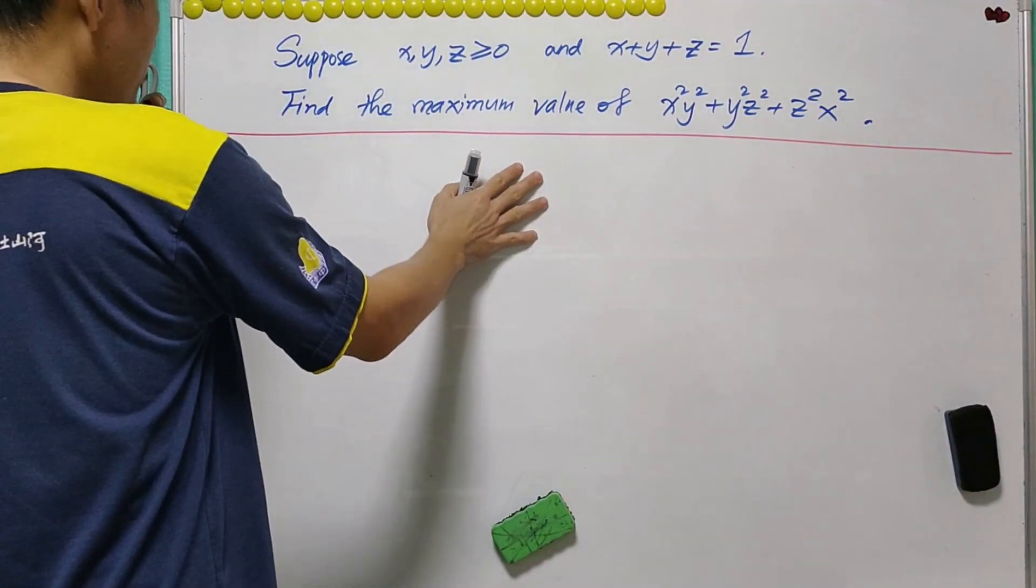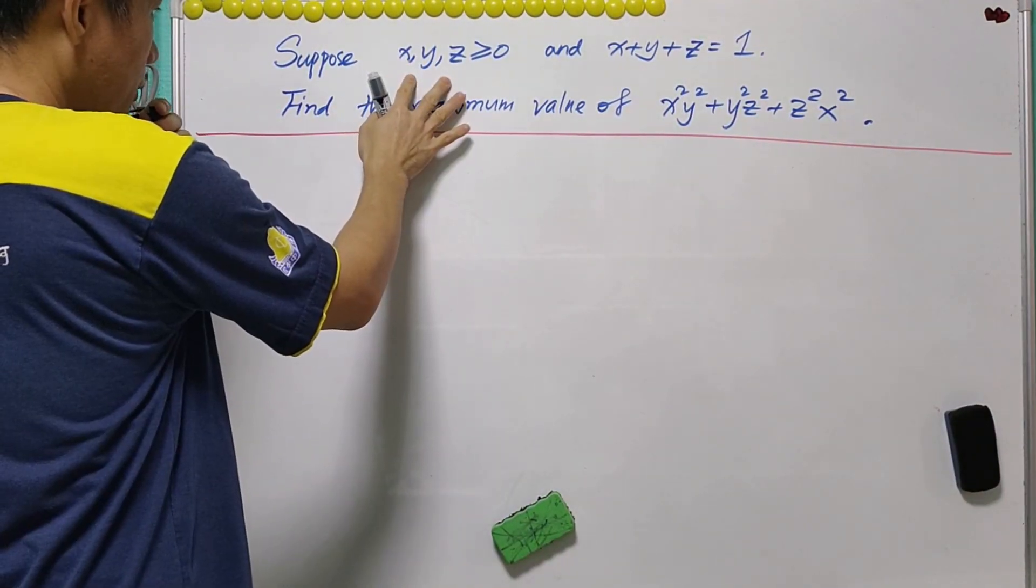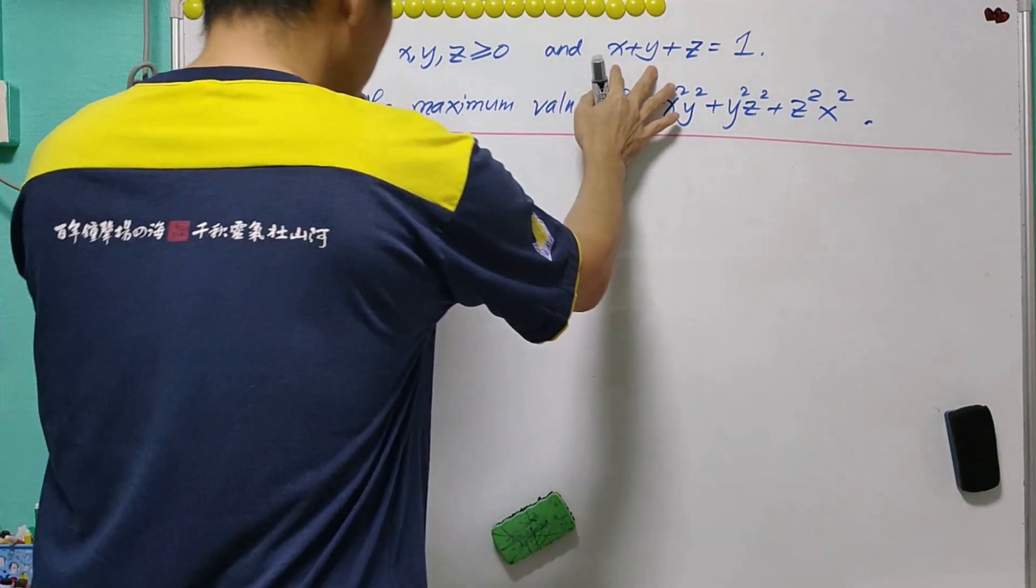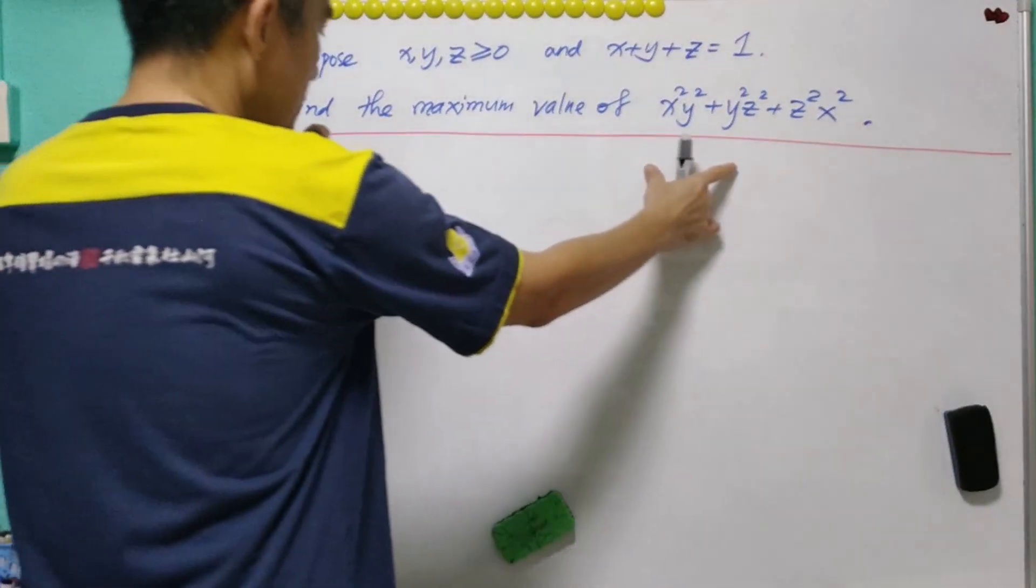This is a standard inequality question. Suppose x, y, z are non-negative and the sum is equal to 1. We are asked to find the maximum value of this expression.